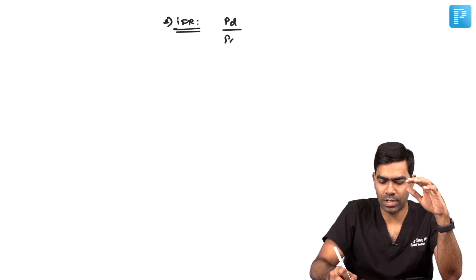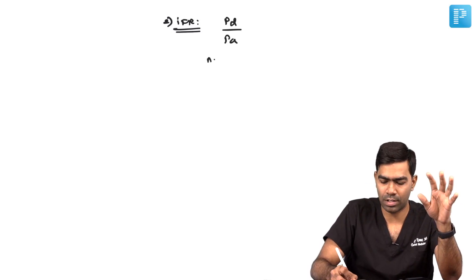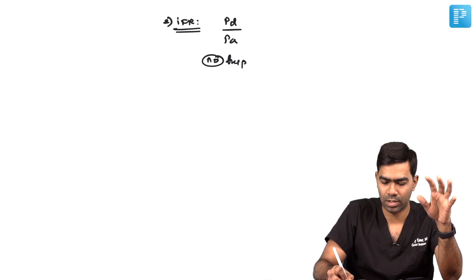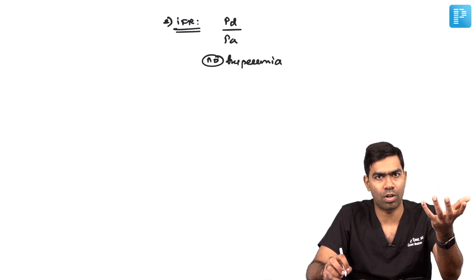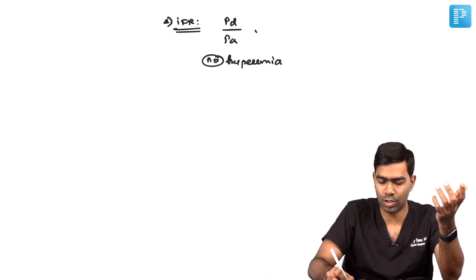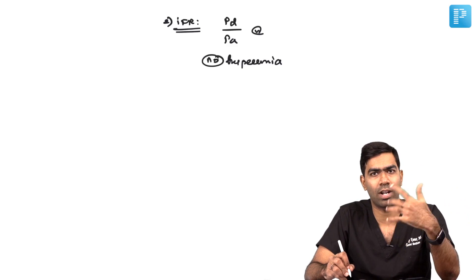Instantaneous wave free ratio allows us to measure the PD/PA without hyperemia, which means you don't need adenosine. But how will you tell whether this is really important or significant? Because we're going to measure the PD/PA not randomly.